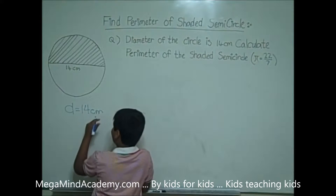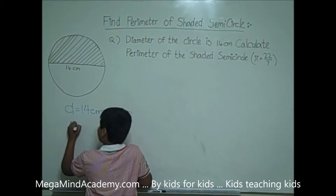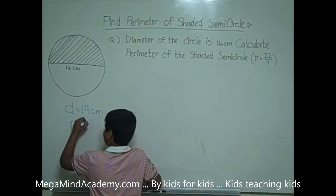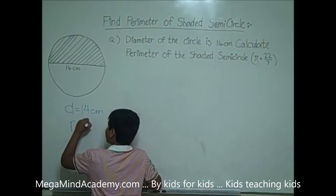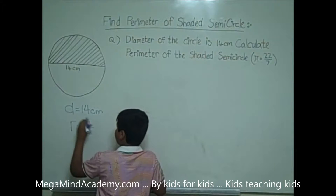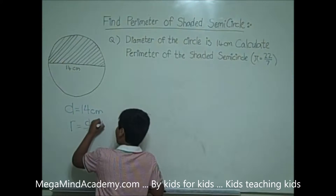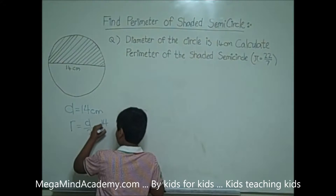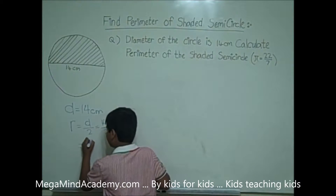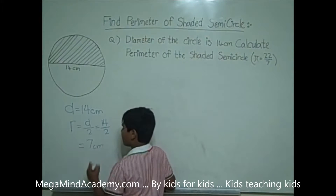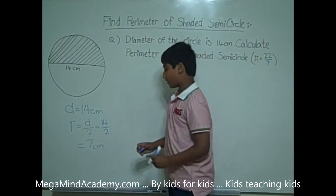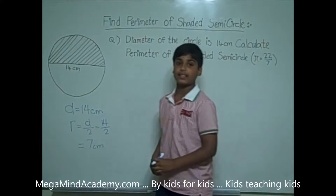Now let's find the radius. The radius is half as much as the diameter. So that means the radius is D for diameter over 2. We know that the diameter is equal to 14 centimeters, so the radius is equal to 14 centimeters over 2, which equals 7 centimeters.